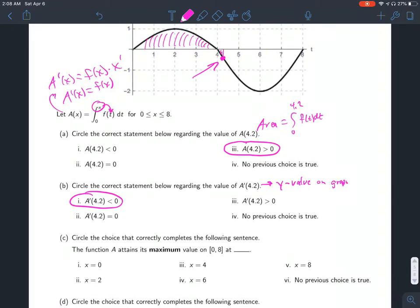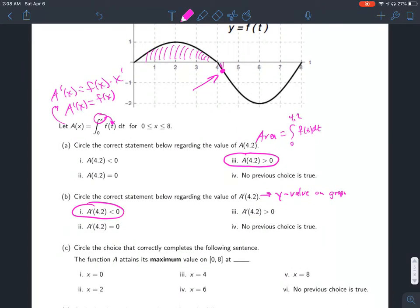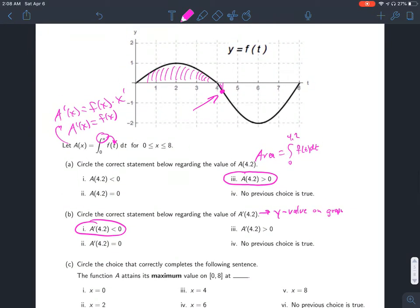C: Circle the choice that correctly completes the following sentence. The function A attains its maximum. Keep in mind that whatever function A is, A prime is equal to f, which is this graph. So we're looking at A prime in this picture. We want to know what the parent graph was before we found the derivative of that.